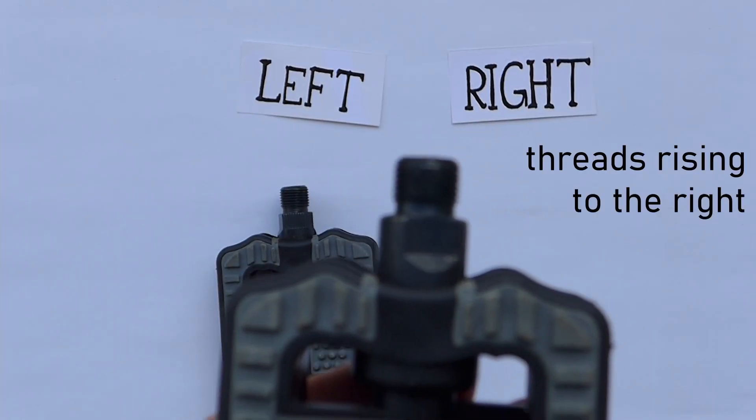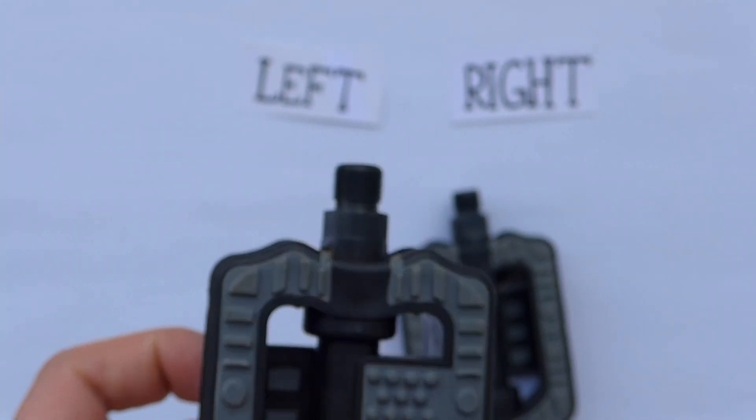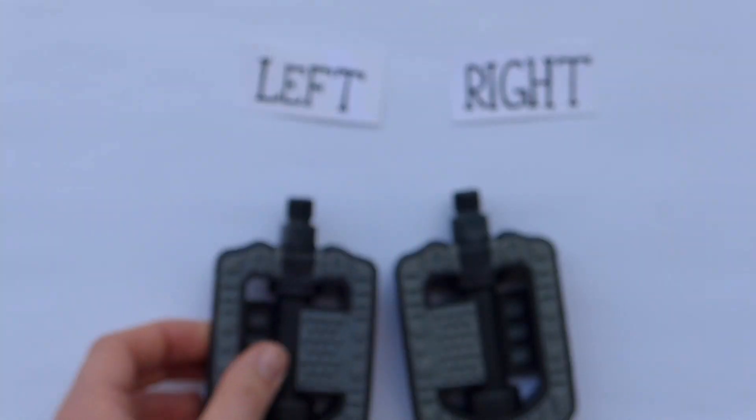Bicycle pedals have opposing threads. The right pedal has a right-handed thread and the left one a left-handed thread. Why is that?